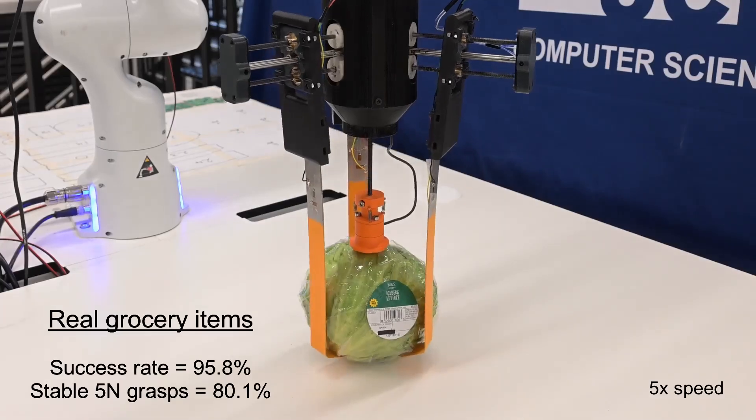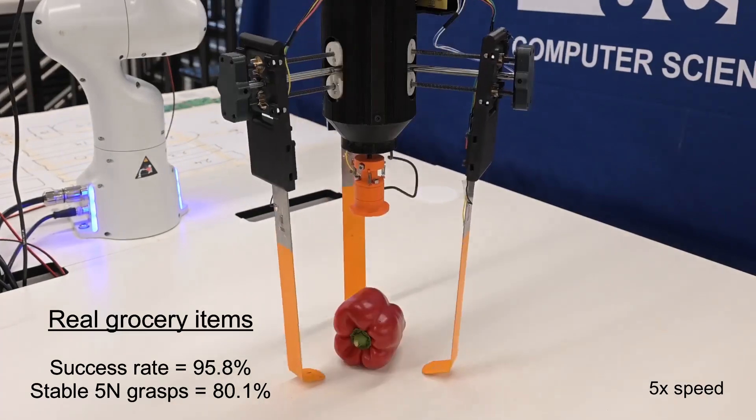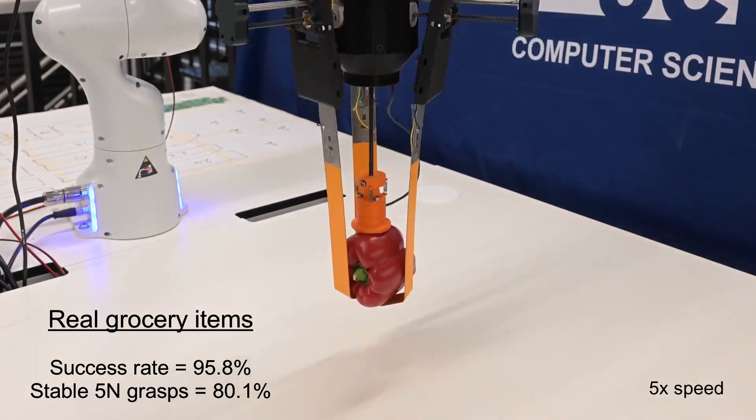Our policy grasps highly irregular and deformable objects, such as a bag of salad or a net of tangerines. These objects are far beyond the training set.